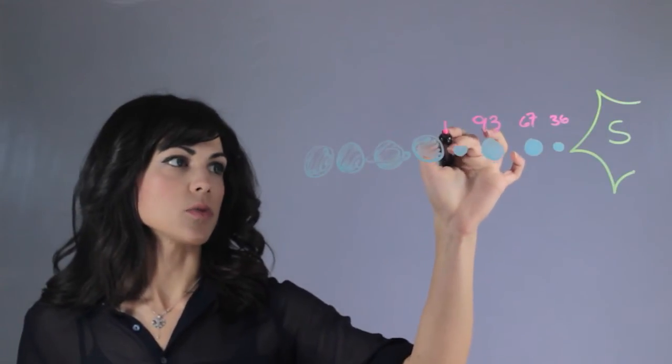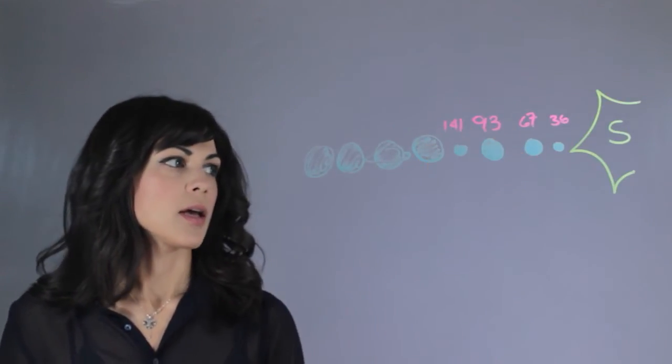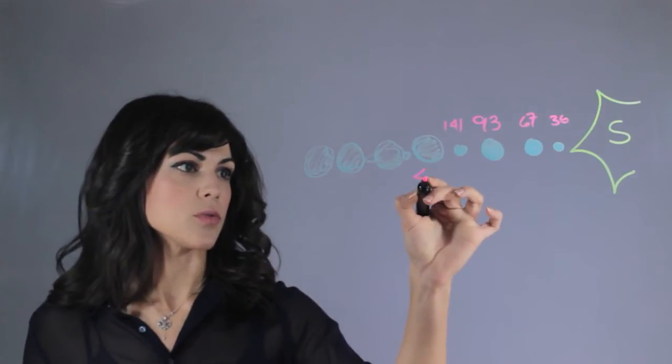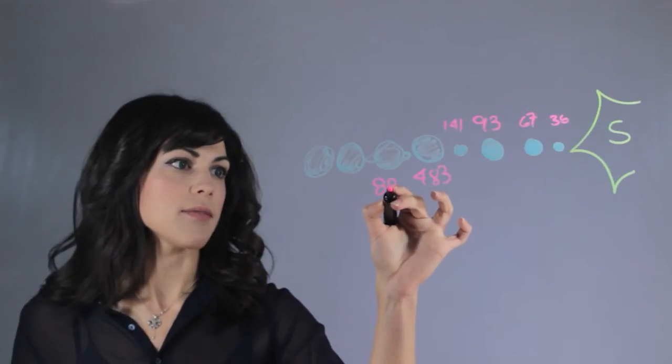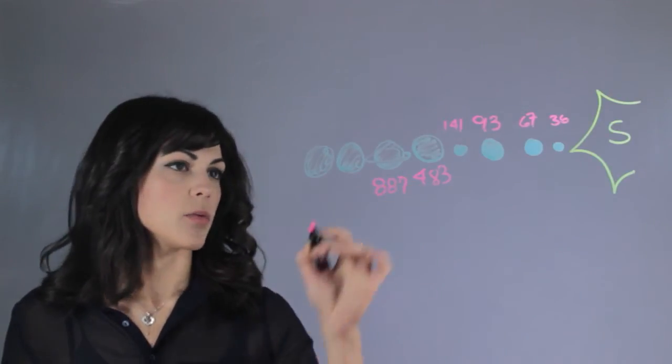Mars is 141 million miles, then we have Jupiter which is 483, and Saturn which is 887.